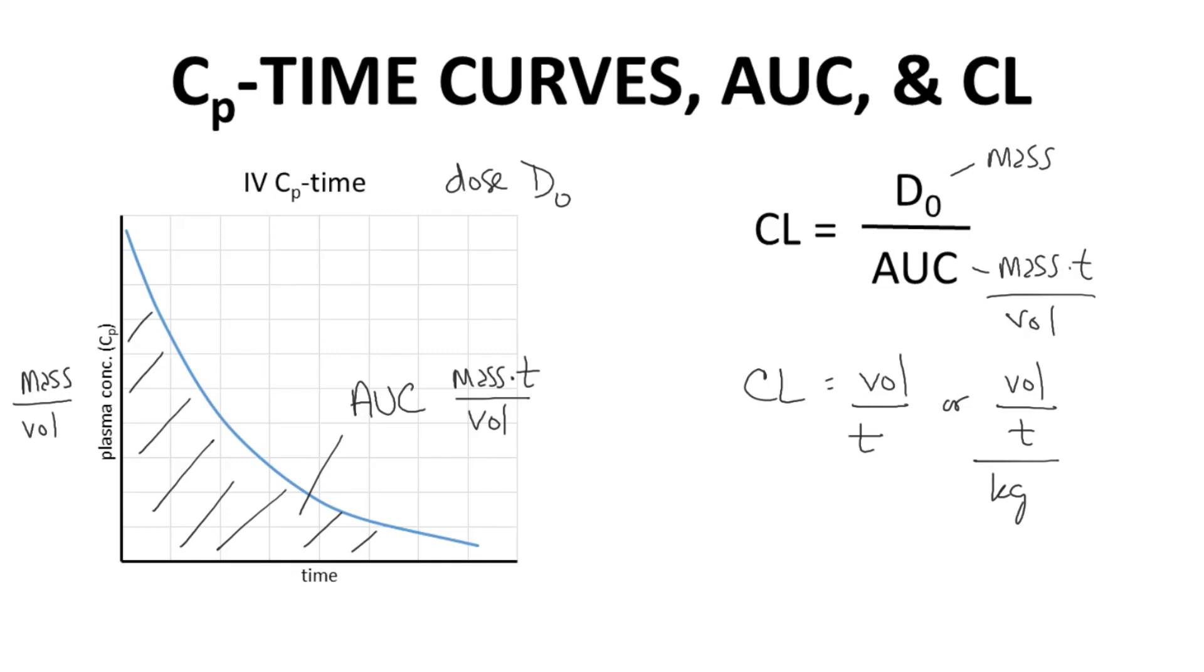So what is clearance? Clearance is the volume of plasma per unit time from which the drug is removed, cleared in the body. Technically, we have calculated total clearance, CLT. The main organs associated with clearance are the liver and kidneys. As plasma with drug flows through the liver, it may be cleared by the liver. Hepatic clearance, CLH. The same goes for the kidneys. Renal clearance.